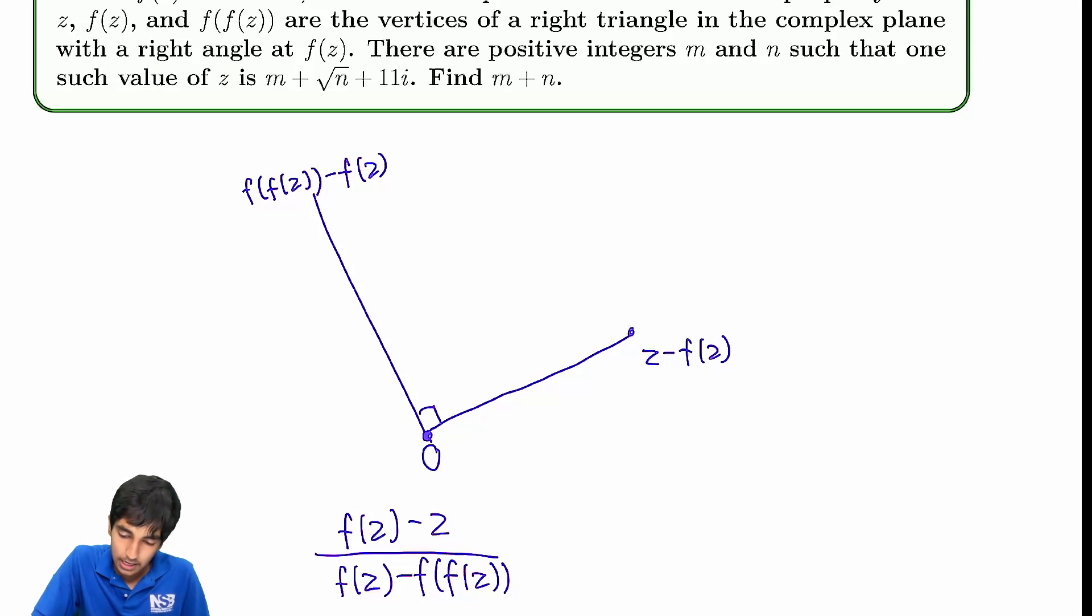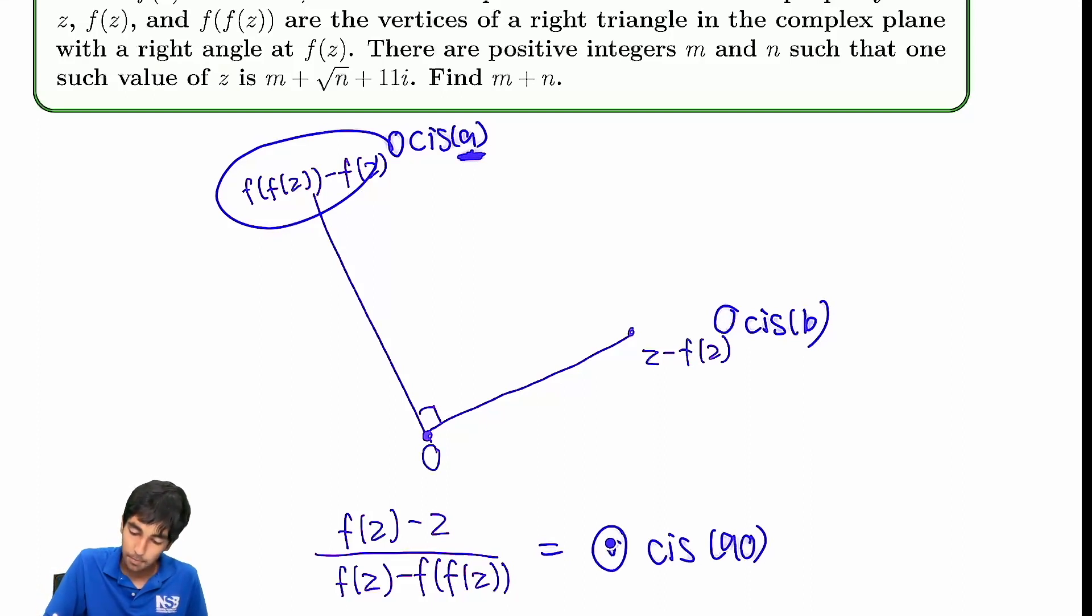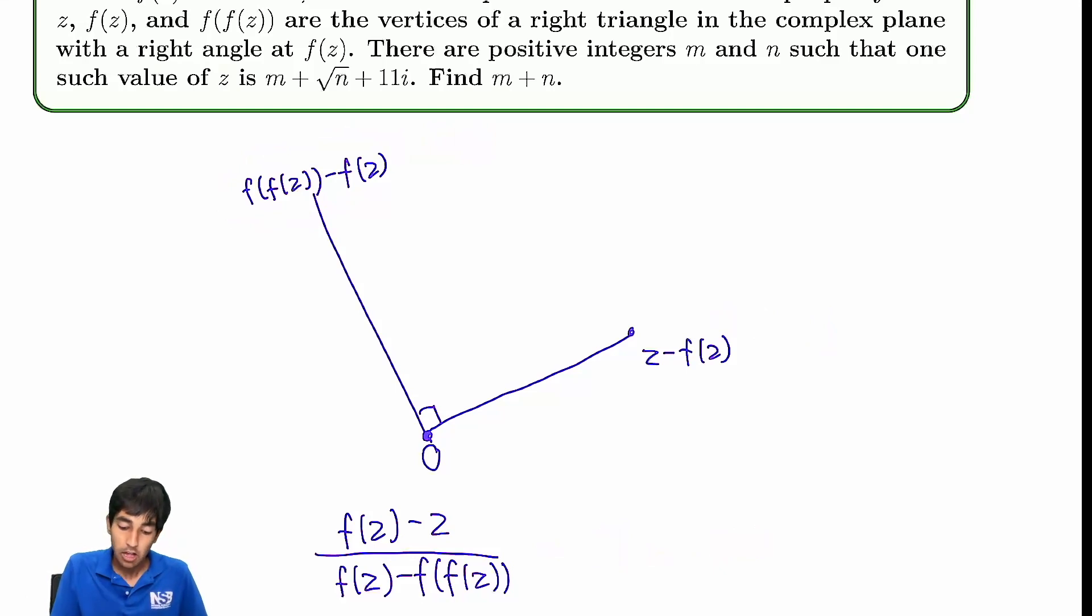They should have an argument that's 90 degrees, meaning that whatever this complex number is, because this has cis of a, and this is something cis of b, something cis of a, this has to be 90 more than b, because it's rotated 90 degrees. When you divide it, this has to be equal to something cis 90. This is just something, like the modulus. So let's find out what this is, and then we'll see when it's going to be something cis 90.